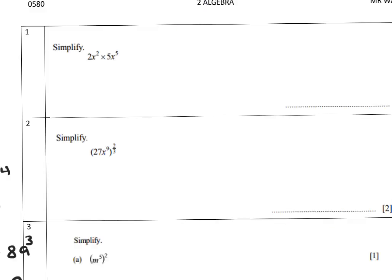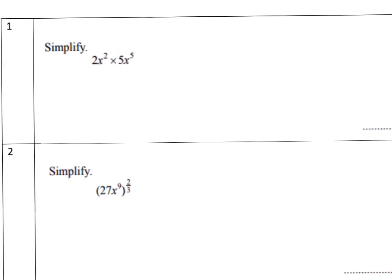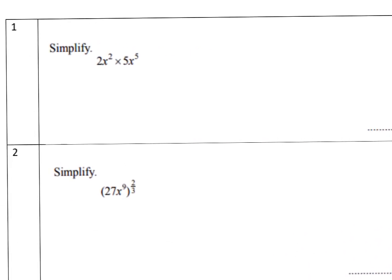Now we can use these rules to simplify. Simplify 2x^2 times 5x^5. The answer is 10x^7: 2 times 5 is 10, and x^2 times x^5 adds the powers to give x^7.